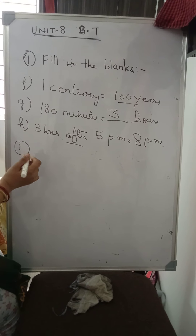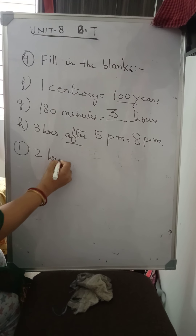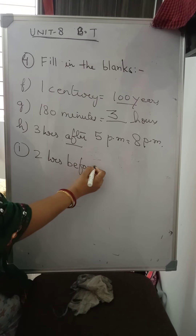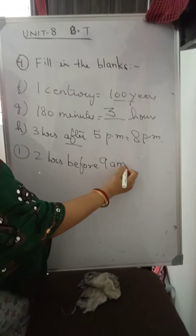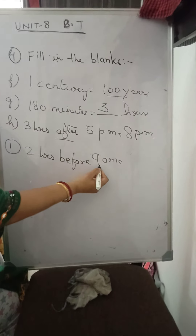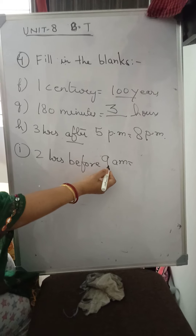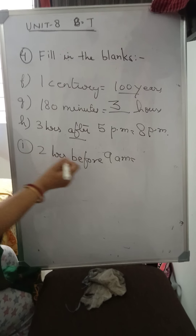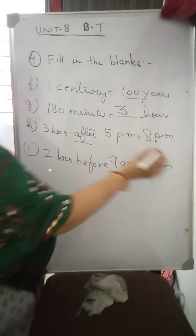Now I: Two hours before nine a.m. Before means go back. One hour before nine a.m. is eight a.m. One hour before eight a.m. is seven a.m. So the answer is seven a.m.